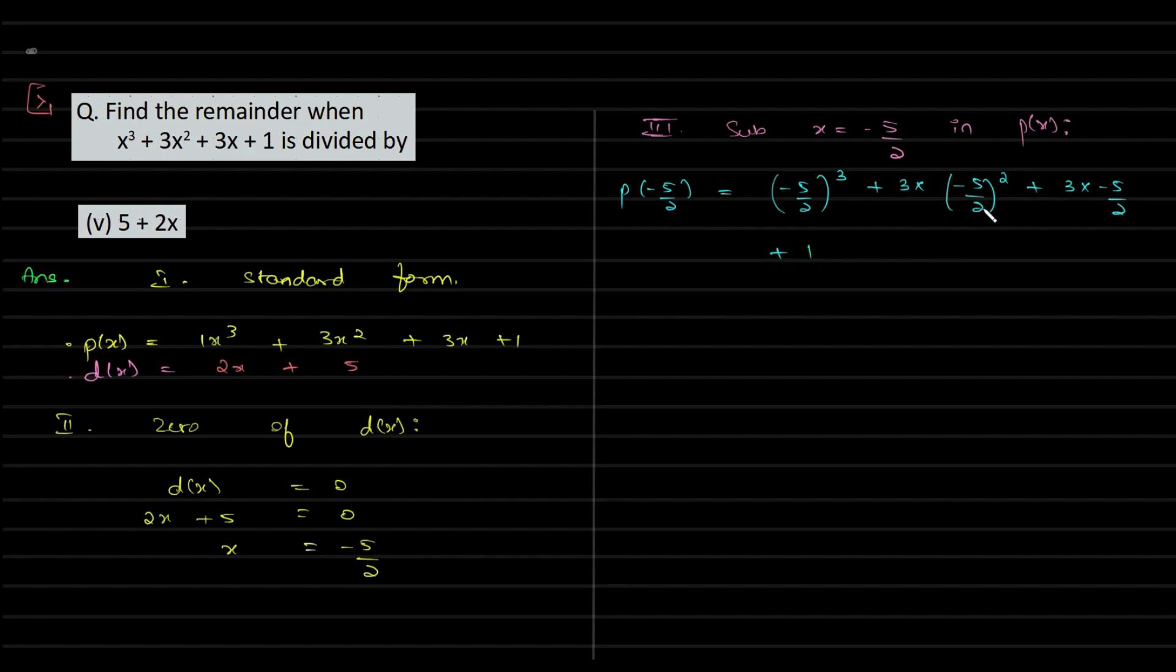This equals -125/8 + 3(-25/4) - 15/2 + 1. The LCM is 8, so converting to common denominator: -125 + 150 - 60 + 8 over 8.